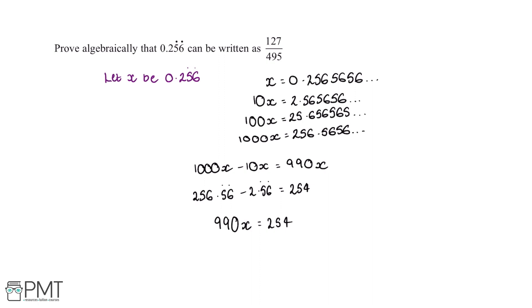And at the start of this question we let x be equal to 0.256 reoccurring. So in order to prove algebraically that this decimal can be rewritten as 127 over 495, we're going to want to rearrange this equation to make x the subject.